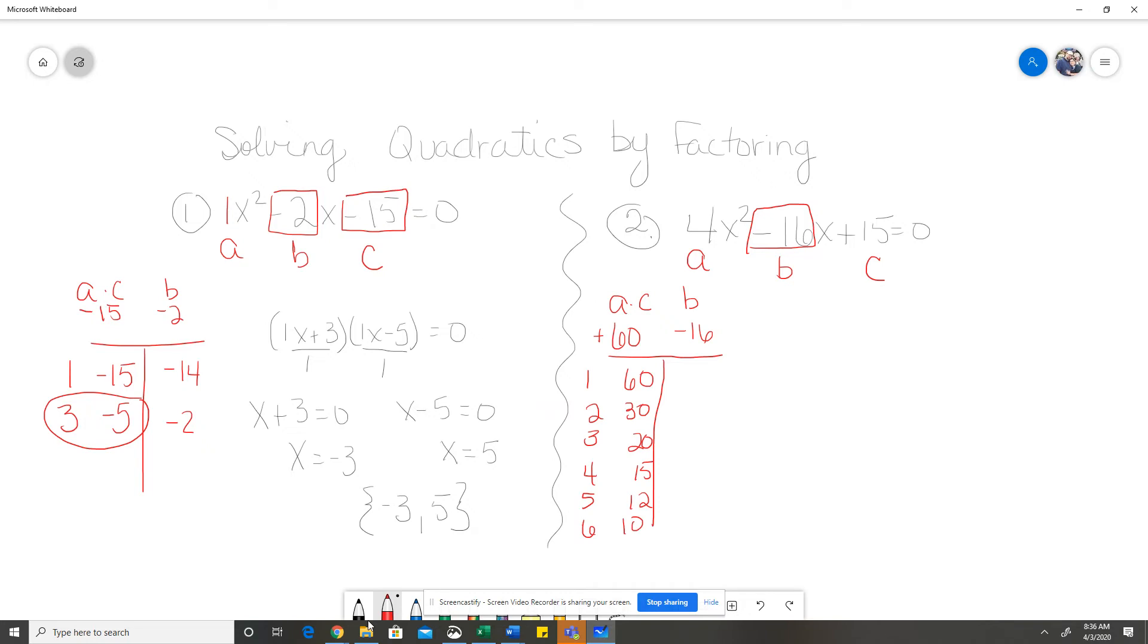Because my a times c is positive, that means that all my factors have to have the same sign. So, I'm going to look at my b to see what that sign is. Since my b is negative, that means that all of my factors are negative. So, I'm going to throw some negatives up on all of these factors. And when I add my factors together, negative 61, negative 32, negative 23, negative 19, negative 17, negative 16.